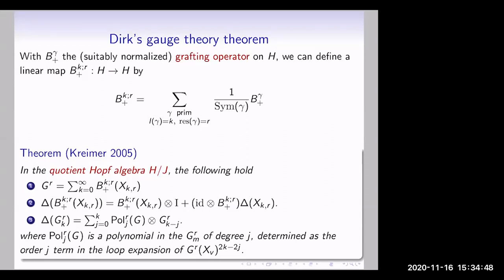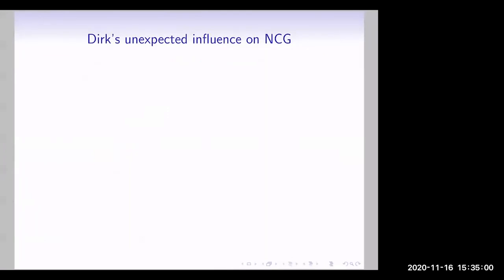The gauge theory theorem was posted by Derek around 2005. In the quotient Hopf algebra, all Green's functions can be generated by grafting, and the co-product on G_R at loop order k is expressible in terms of polynomials in G on the first leg times the Green's function for the same residue at a lower loop order. This story can be found in a paper I wrote gathering all these results and references. Now I'd like to tell something Derek may not know about.